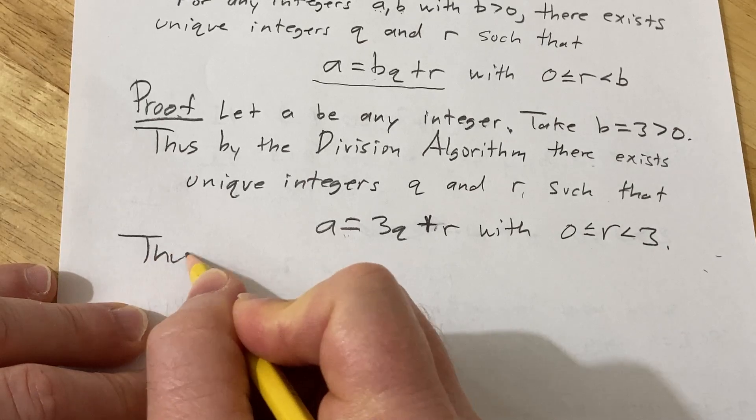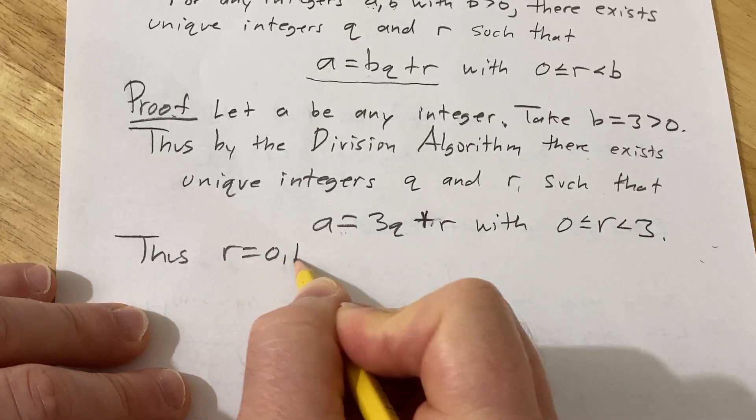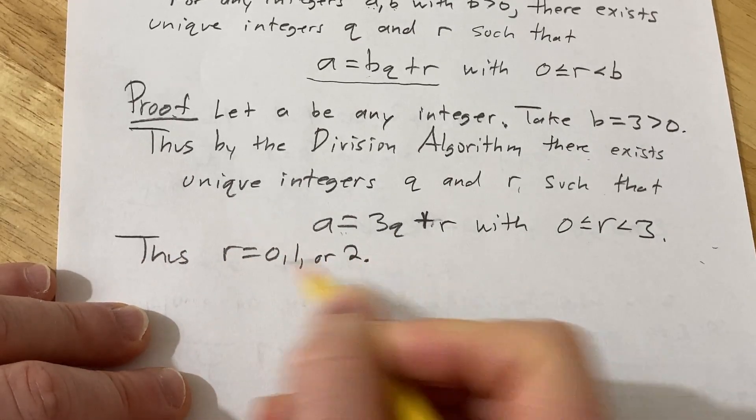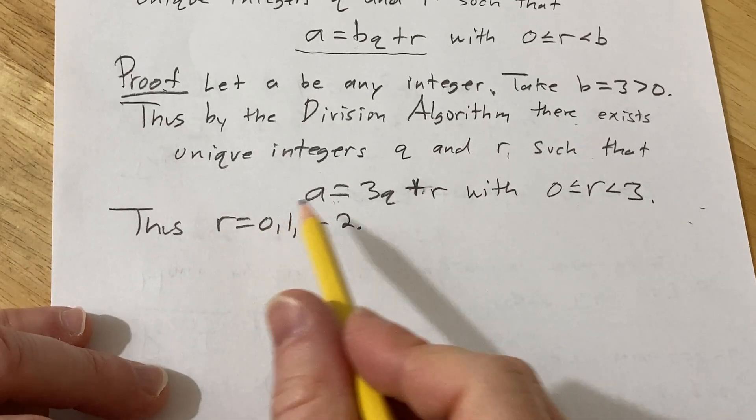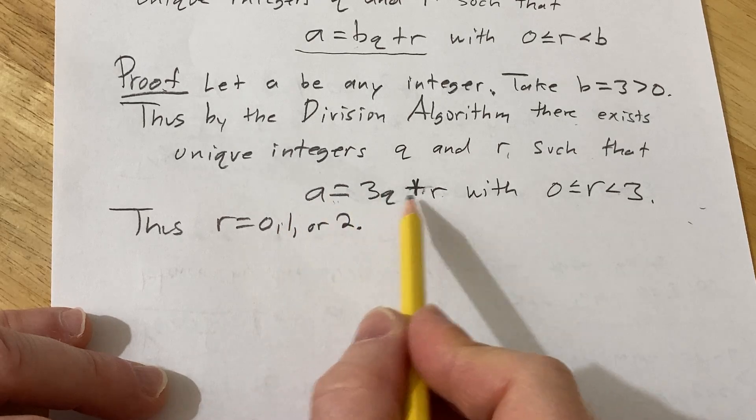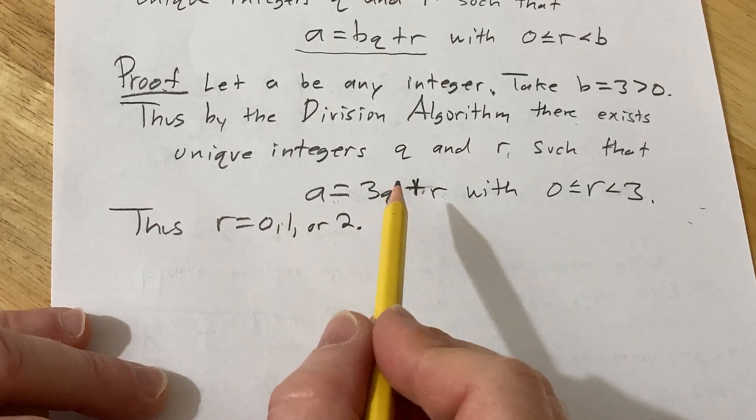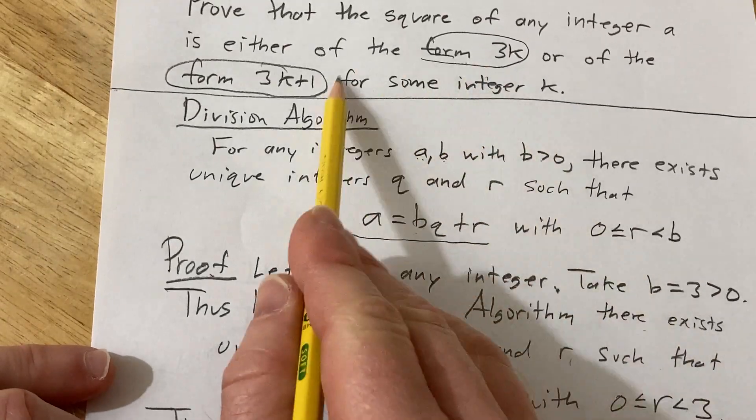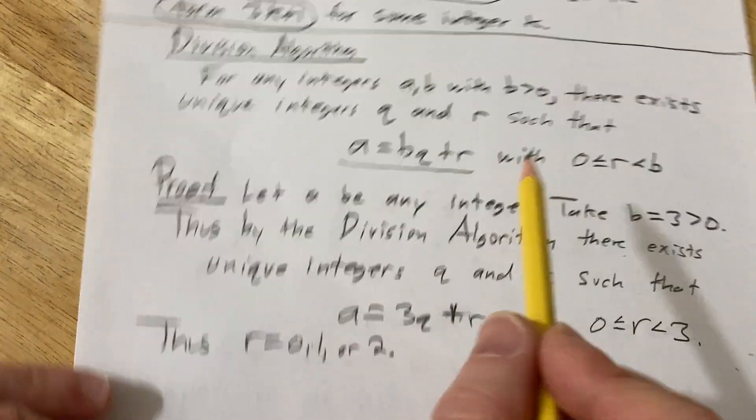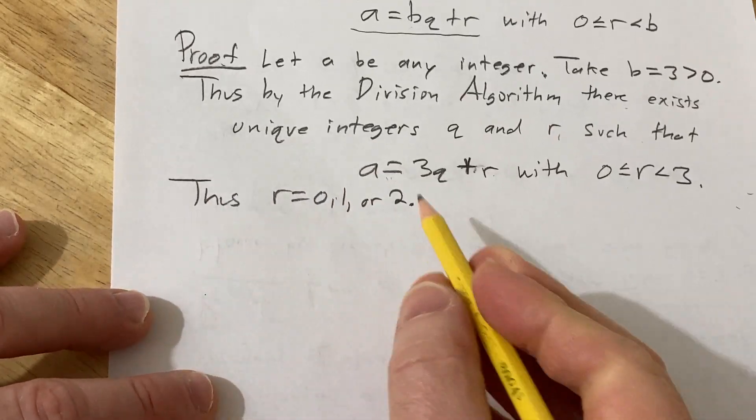Thus r is 0, 1, or 2. Now we're going to do each one individually. We're going to plug in r into this equation and then look at a squared and make sure that it's of the form 3k or 3k+1 and that will complete the proof.